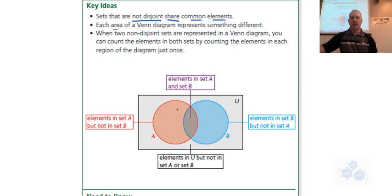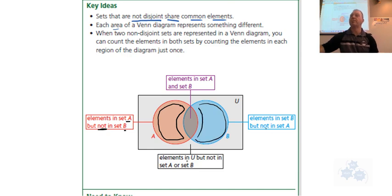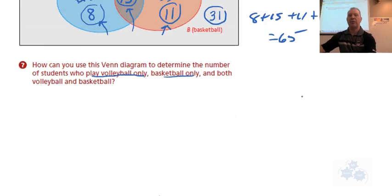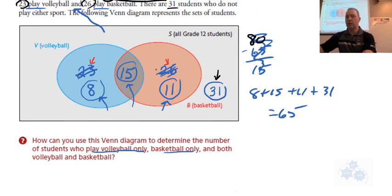Just by way of review: this reddish area represents elements that are in A but not B. Likewise, this area represents elements that are in set B but not in A. This area in the middle represents elements that are in set A and set B — this is A and B. And outside of the circles, in the outer region, that's elements that are not in A or B but still in U. In our previous example, that would be the 31 students that don't play volleyball or basketball — maybe they play other sports, or maybe they don't play any.